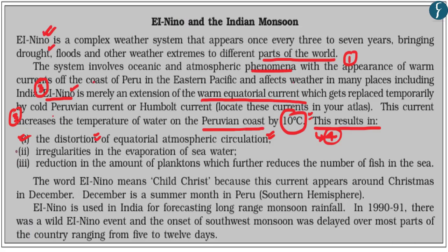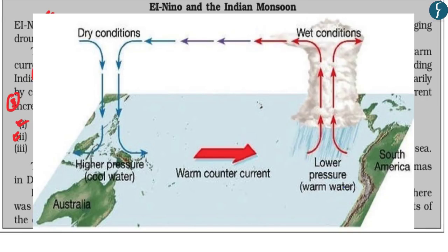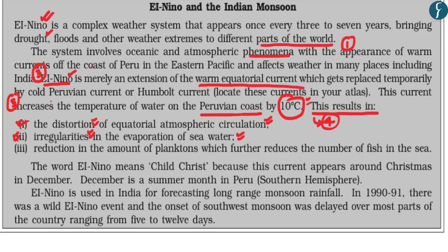The second effect of El Niño is that it creates irregularities in seawater evaporation. In a normal year, the Peruvian coast has cold water while Australia's coast has warm water, leading to high evaporation near Australia. During an El Niño year, the warm current moves to the Peruvian coast, causing a reversal in evaporation patterns.